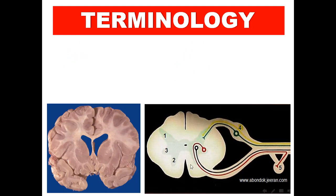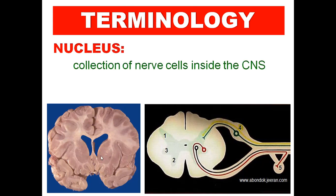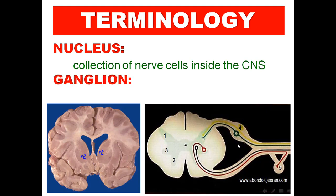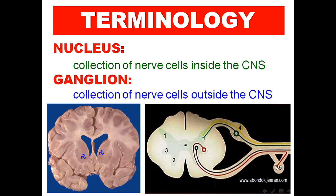Regarding terminology, a nucleus is a collection of nerve cells inside the CNS. Unlike ganglia, which are collections of nerve cells outside the CNS.